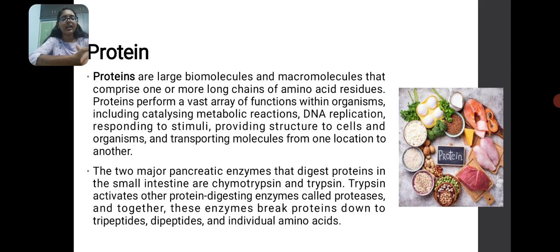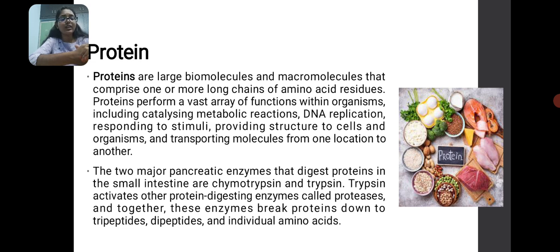Protein is another macronutrient. It is made up of one or more long chains of amino acids. It performs various functions in the human body like catalyzing metabolic reactions, DNA replication, responding to stimuli, and providing structure to cells and organisms. The two major pancreatic enzymes that digest protein in the small intestine are chymotrypsin and trypsin. These activate other protein-digesting enzymes like proteases, and together they break down protein into tripeptides, dipeptides and individual amino acids.